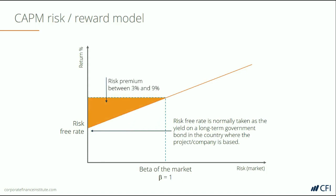We can then measure the equity risk premium, which is the additional amount required by investors for the risk that they're taking. It's typically between 3 and 9%, but it varies by country and by market.